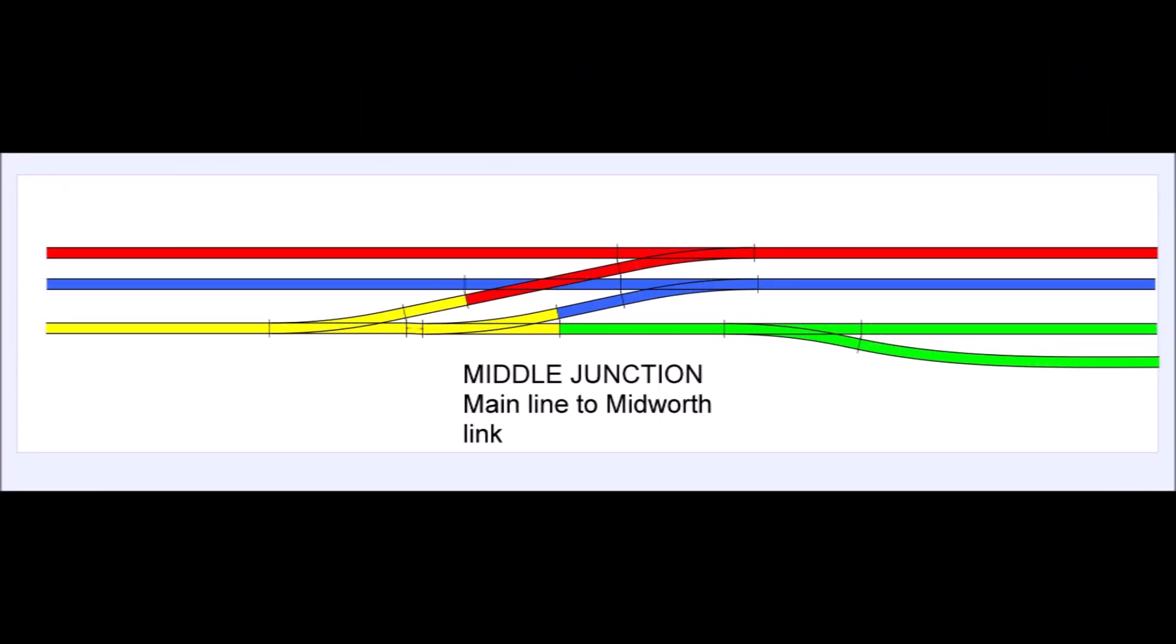So I started by laying in the first two lines, going from Trinity Square storage on the yellow across to the up main, and coming from the down main back to Trinity Square storage. So far so good.